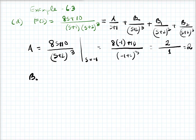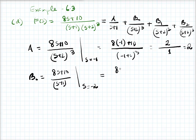B0 is also straightforward. You multiply everything by (s+2) whole cube to get (8s+10)/(s+1), and then replace s by minus 2. This gives you (8×(-2)+10) / (-2+1) = (-16+10)/(-1) = (-6)/(-1), so B0 equals 6.